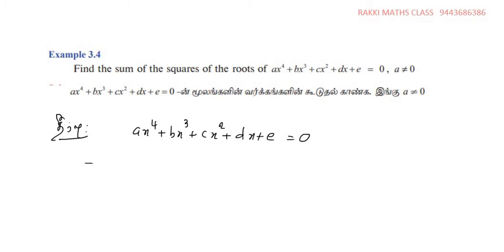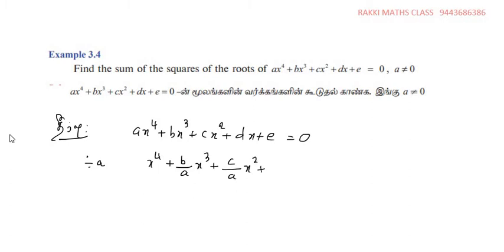First, the monic equation is obtained by dividing through by a, the leading coefficient. This gives x⁴ plus (b/a)x³ plus (c/a)x² plus (d/a)x plus (e/a) equal to 0.